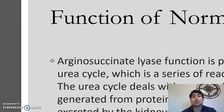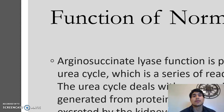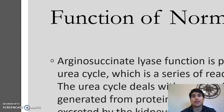The function of a normal gene: argininosuccinate lysase functions by participating in the urea cycle, which is a series of reactions in liver cells. Basically, the urea cycle deals with excess nitrogen. If nitrogen begins to accumulate, it can turn into ammonia, and as stated, ammonia is bad for the body.